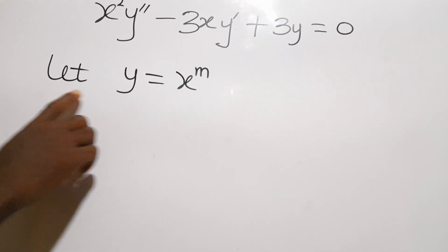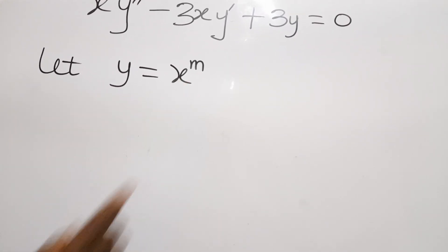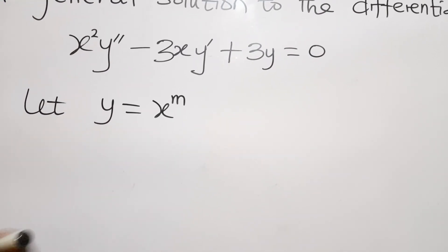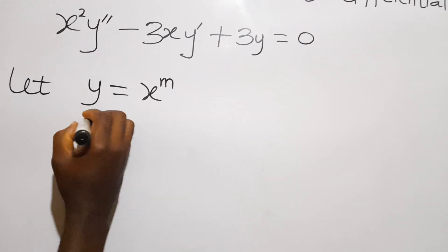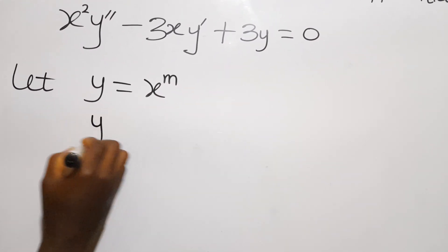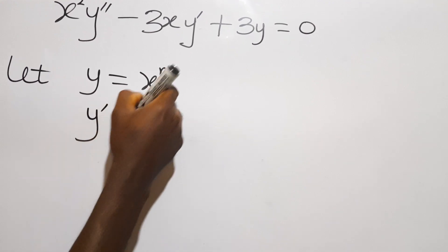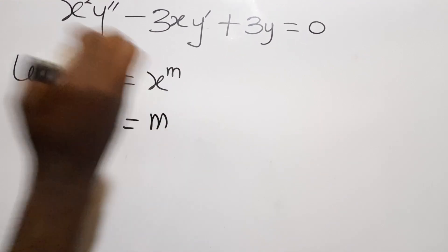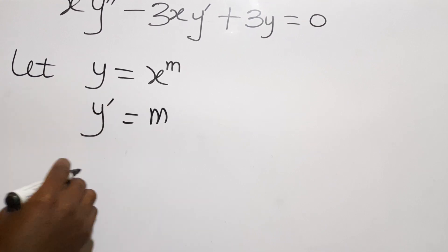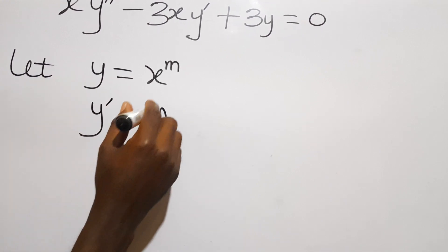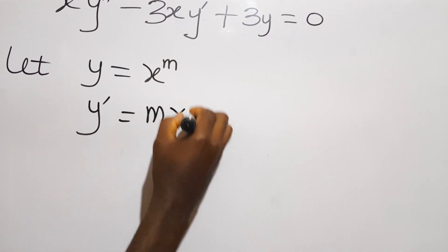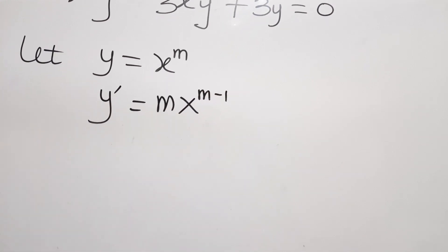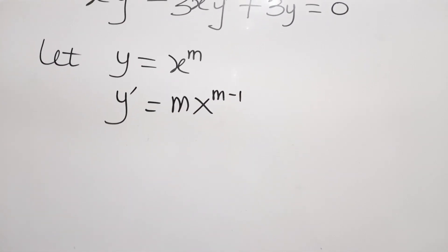Since y equals x^m, we differentiate it. So y prime equals m·x^(m−1). Remember m is constant, so simple differentiation rules say we drop the exponent, repeat the function, and subtract one from the exponent.